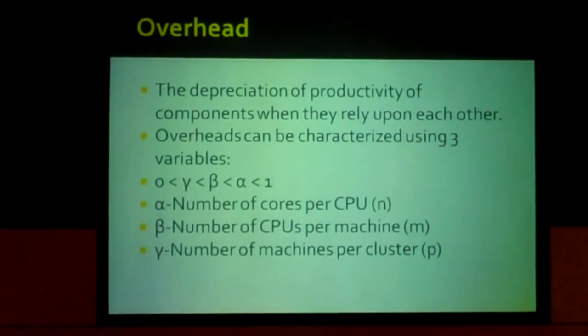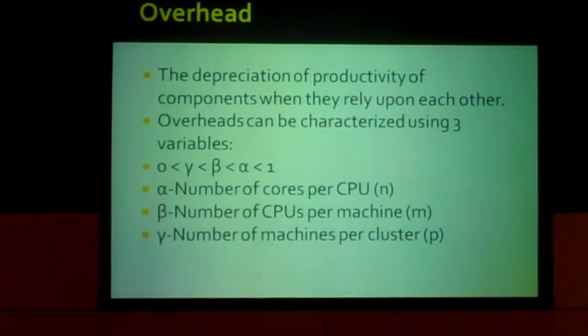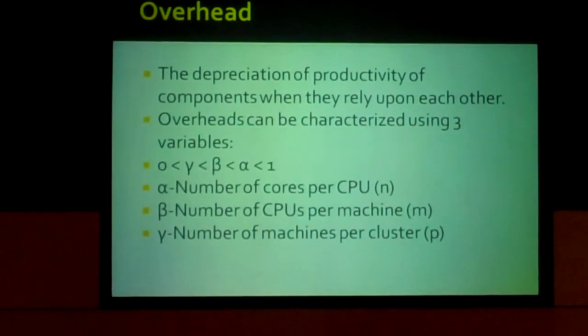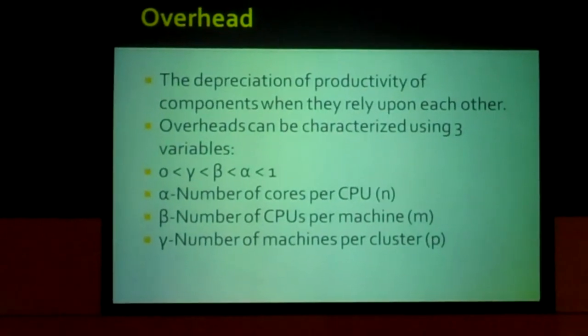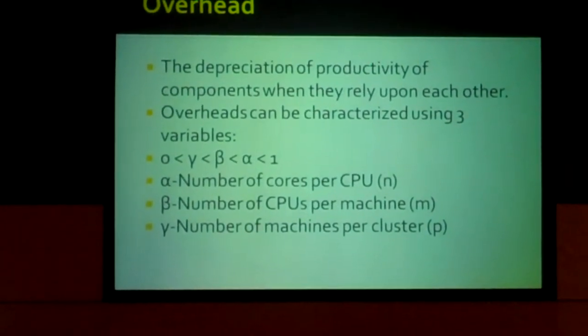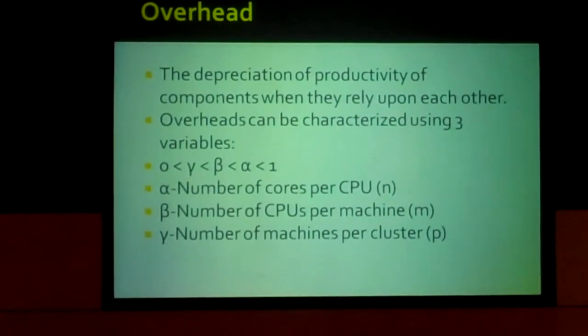They never reach one because as long as there's more than one component relying on another, the latency required to send information from one component to another prevents it from operating at 100% productivity. Alpha is associated with the number of cores, beta with the number of CPUs, and gamma with the number of machines. Those are N, M, and P as you see.